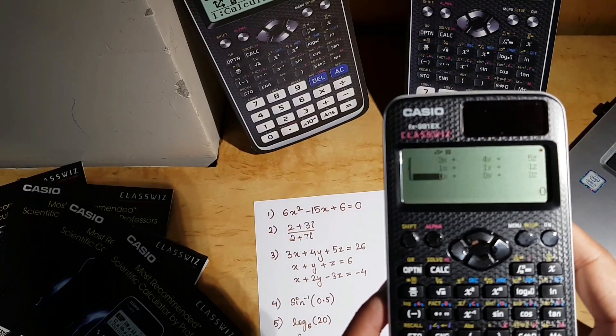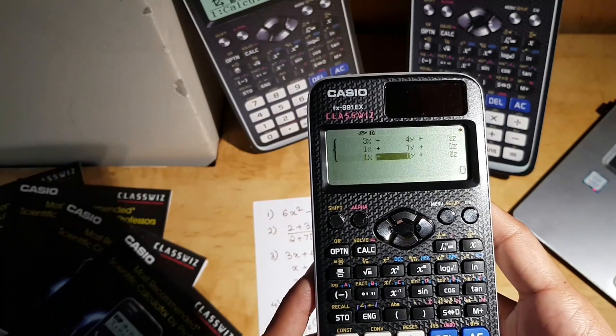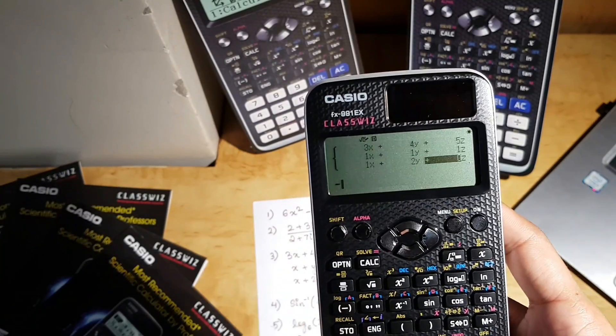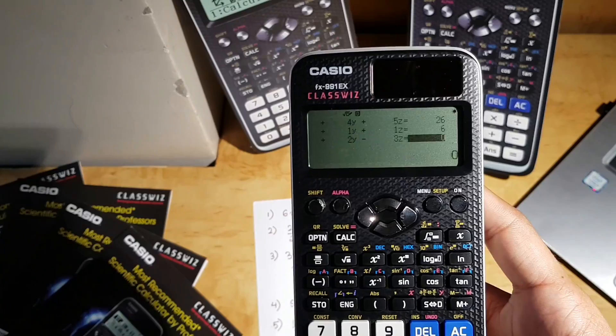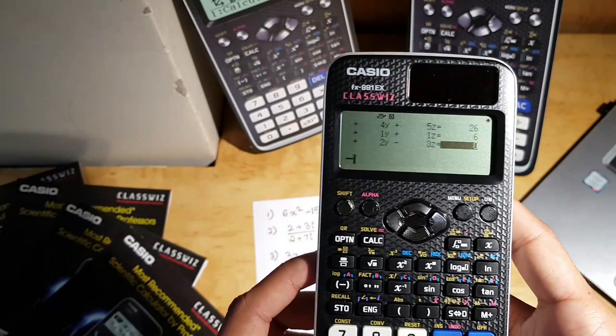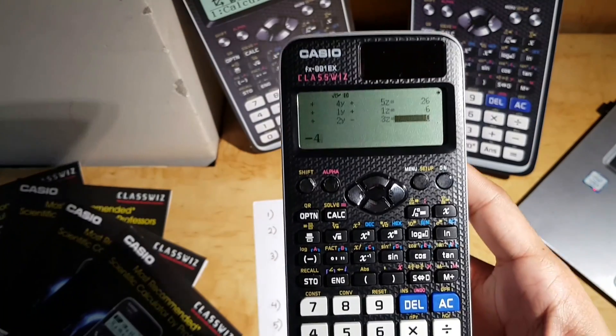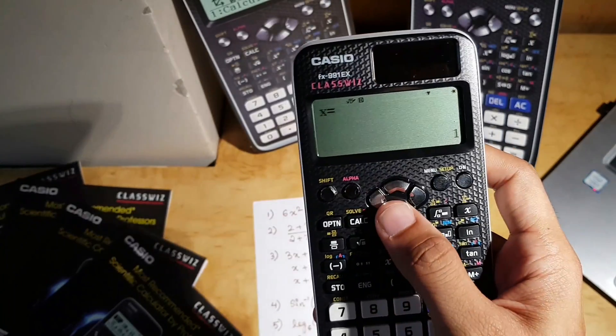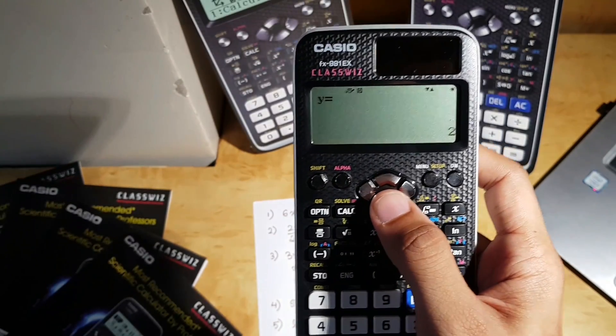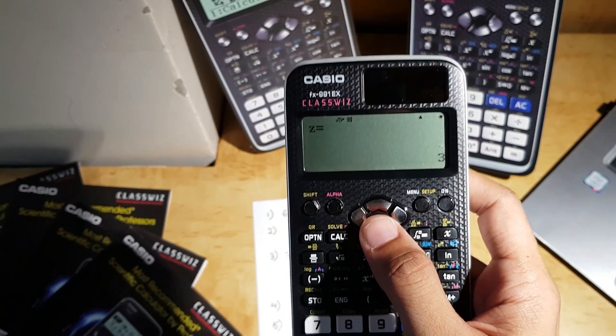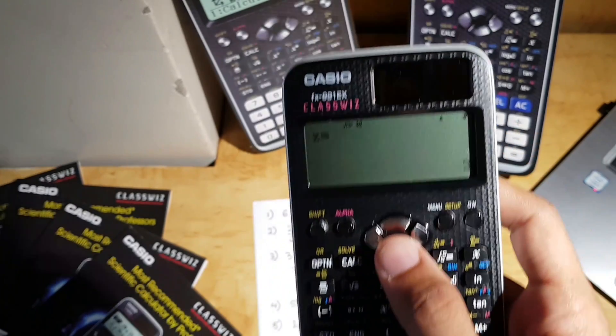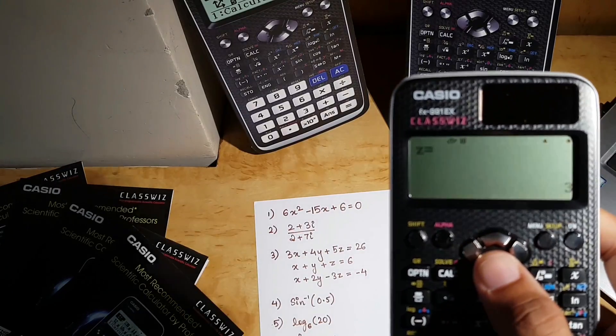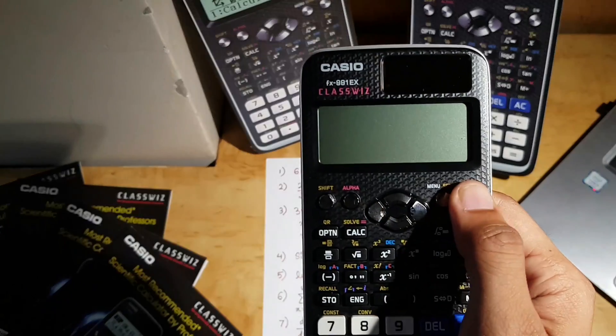Now in the next equation, coefficient of x is 1, coefficient of y is 2, and the coefficient of z is minus 3. And this is equal to minus 4. So what is the solution, guys? x is 1, y is 2, z is 3. And that is the solution. You saw how quickly all these calculations were done.